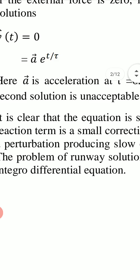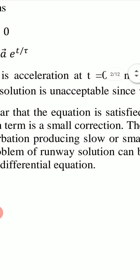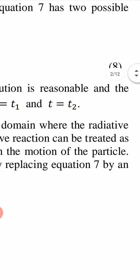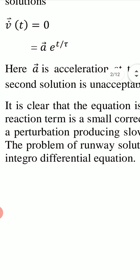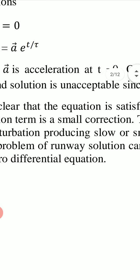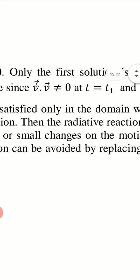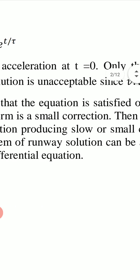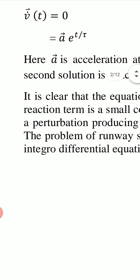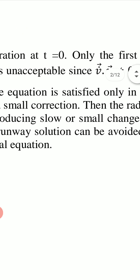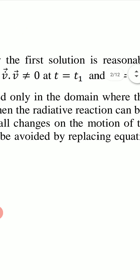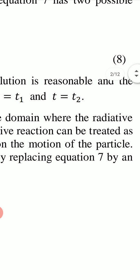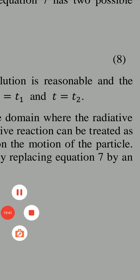It is clear that the Abraham-Lorentz equation is valid only in the domain where the radiative reaction term is a small correction. In that regime, the radiative reaction can be treated as a perturbation producing slow or small changes in the motion of the particle.